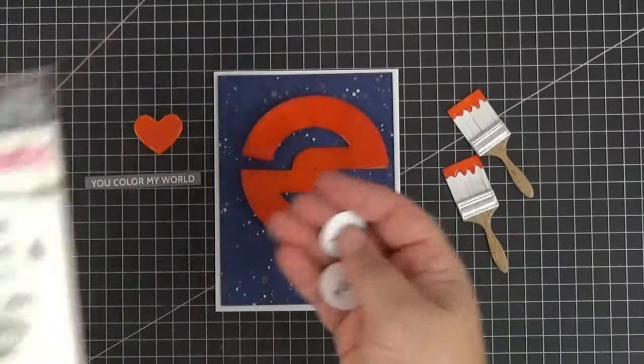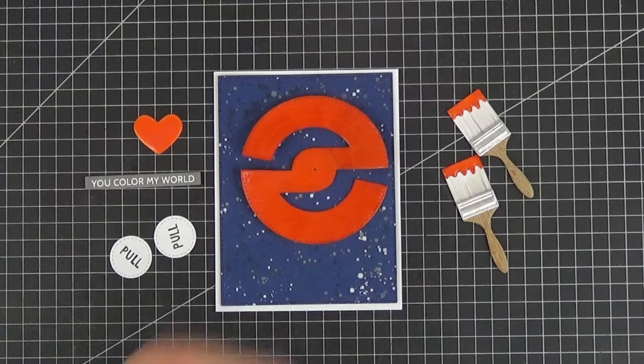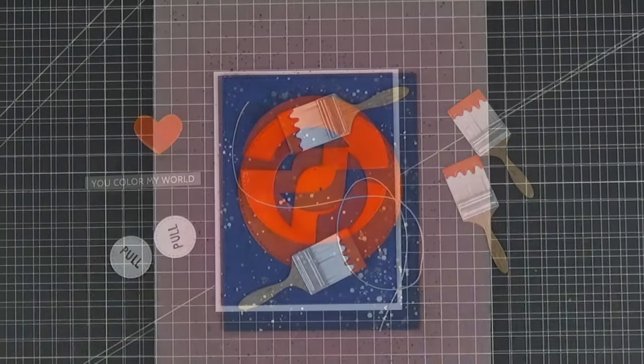I lost my most used stamps from the Interactive Label set so I used this cool Christmas greeting set to partially stamp the word pull on two 1 inch circles. We will also need about 16 inches of string, preferably the type that doesn't unravel easily.